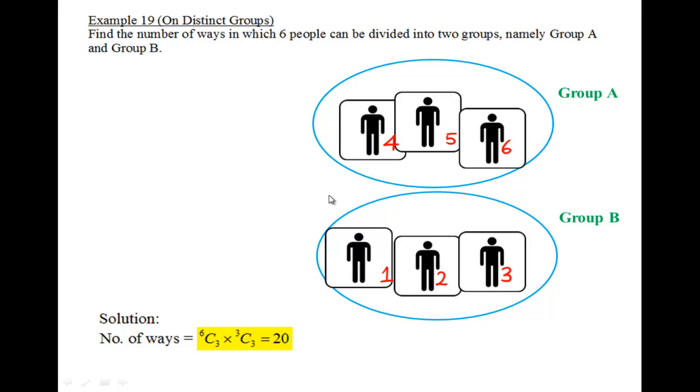Because earlier was 1, 2, 3 in Group A. Now 1, 2, 3 is in Group B. That's the reason why in this case we don't divide by 2 factorial. So the result is 20.